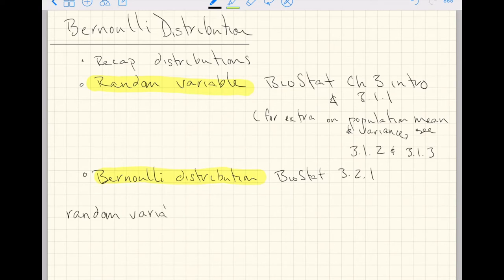A random variable holds a few different ideas in mind for us. A random variable is essentially a variable whose outcome is unknown. Hence, it's random.